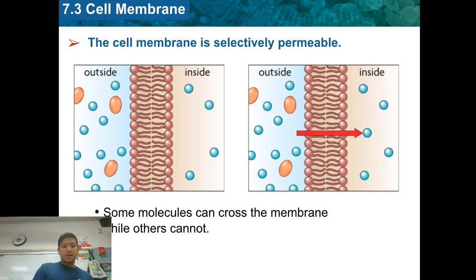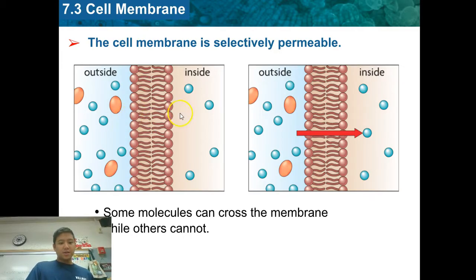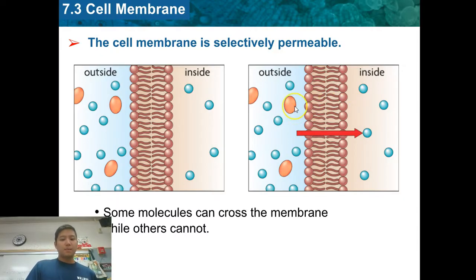The cell membrane is selectively permeable, meaning only some things can permeate or go through this plasma membrane. The lipid bilayer has hydrophilic heads on the outside and hydrophobic tails on the inside. Some things can go through the membrane — small molecules such as water can make their way through pretty easily. But large molecules such as sugar cannot go through the membrane.